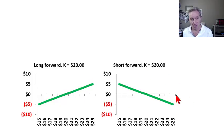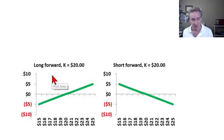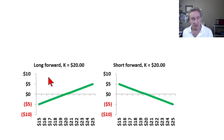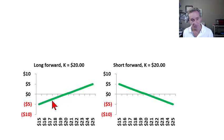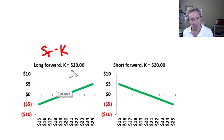Our simplest payoff diagrams are for forward and futures contracts, illustrated here on the left. This is a payoff diagram for a long position in a future or forward contract with a delivery price equal to $20, that's K equal to 20. In the case of the long forward contract, the buyer is promising to purchase that commodity in the future at this predetermined price of $20. In the case of the short, it's a promise to sell the commodity in the future at the predetermined delivery price of $20. The payoff diagrams for forward and futures are very simple, and that would be the case for most futures contracts.